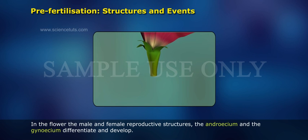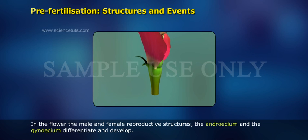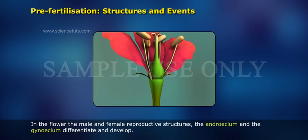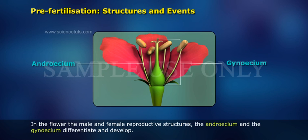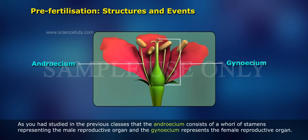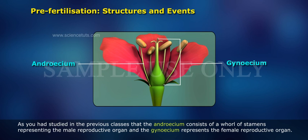In the flower, the male and female reproductive structures, the androecium and the gynoecium, differentiate and develop. The androecium consists of a whorl of stamens representing the male reproductive organ, and the gynoecium represents the female reproductive organ.